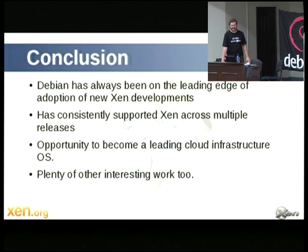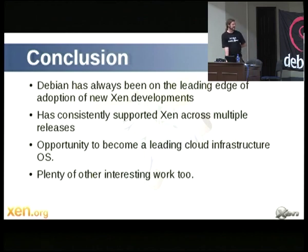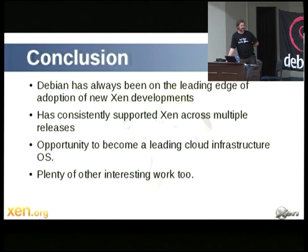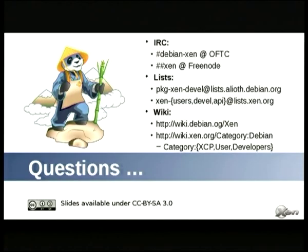Hopefully you've seen that Debian has been an excellent distribution for Xen — one of the most consistent in support over the years. There's also a good opportunity for Debian to become a really leading cloud infrastructure operating system. Debian is really good in the data center, and there's no reason it couldn't be an excellent choice for the cloud as well. Here are some places where people hang out in Debian and Xen land if you want to come for a chat, ask questions, or get involved. Any questions?